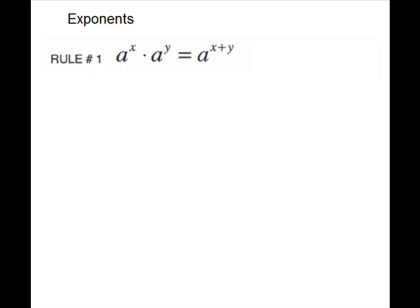The first rule we have is called the product rule. It is for multiplying like bases. You will keep the base and add the exponents.